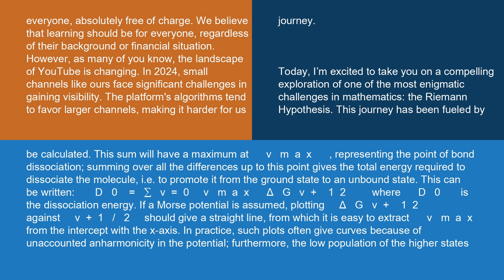If a Morse potential is assumed, plotting ΔG(v+1/2) against v+1/2 should give a straight line, from which it is easy to extract v_max from the intercept with the x-axis.